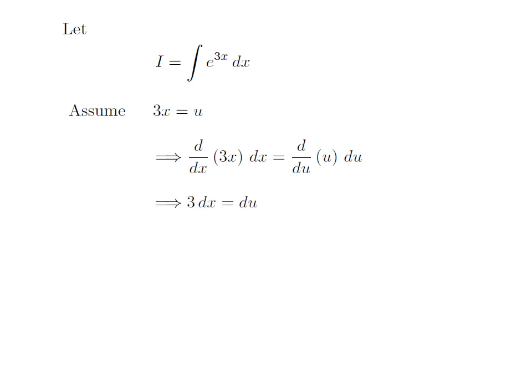As we know, differentiation of 3x with respect to x is equal to 3 and differentiation of u with respect to u is equal to 1. So we are left with 3 into differential of x is equal to differential of u. I have taken 3 to right, so I got differential of x is equal to 1 upon 3 into differential of u.